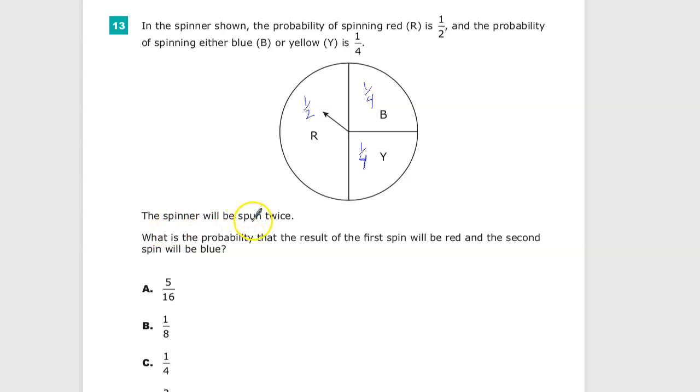The spinner will be spun twice. This means multiple events because with a spinner, it does not matter what you land on - you can land on it again. If you've played any game where you use a spinner, you've probably landed on something twice or seen somebody land on something twice. They're not related.